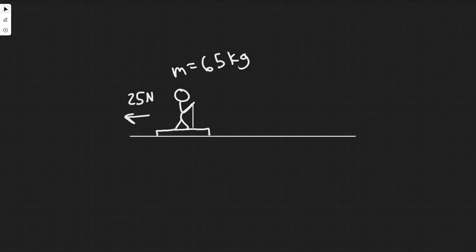In this problem we're told that a constant friction force of 25 newtons acts on a 65 kilogram skier for 15 seconds. What is the skier's change in velocity?